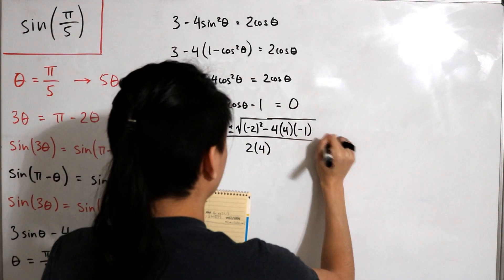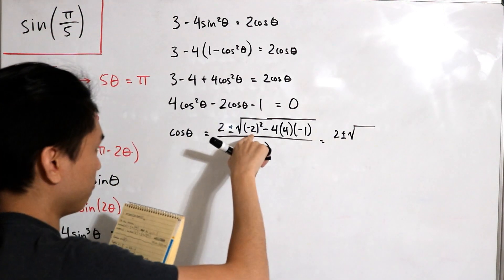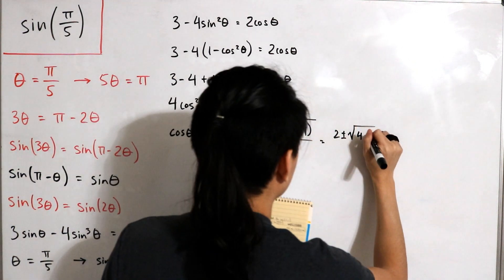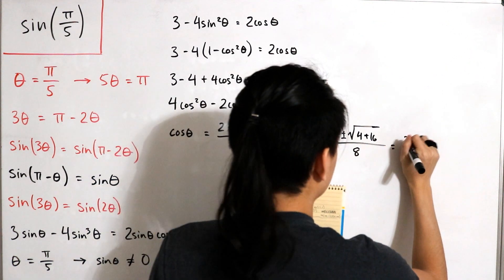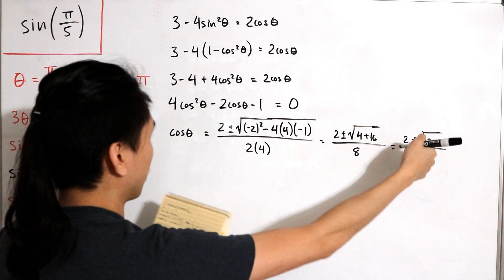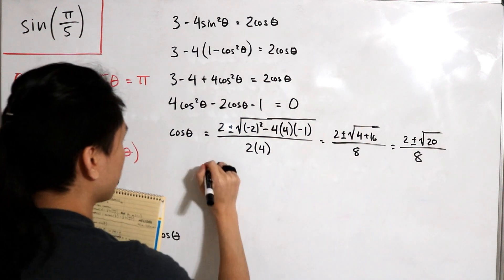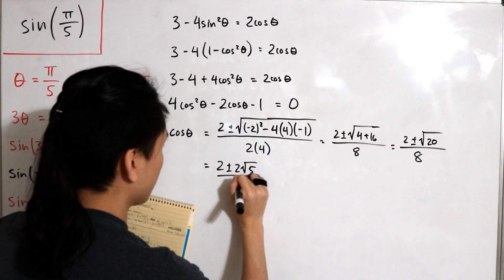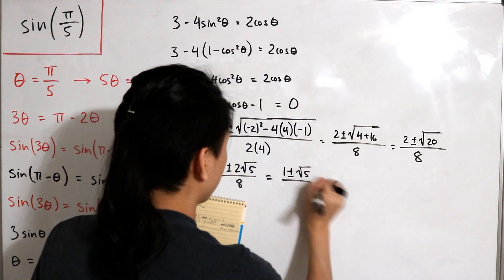Simplifying: we have two plus or minus the square root of four plus sixteen, divided by eight — that's the square root of 20 divided by eight. We can write 20 as four times five, so the square root of 20 is two times the square root of five. This gives us two plus or minus two times the square root of five, divided by eight, which simplifies to one plus or minus the square root of five, divided by four.